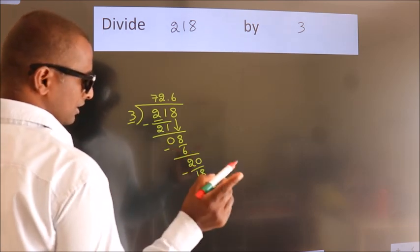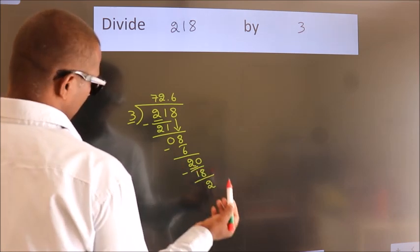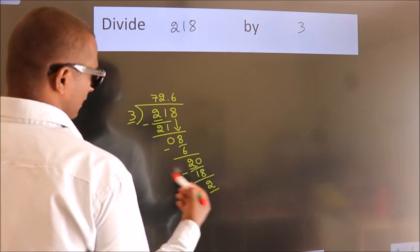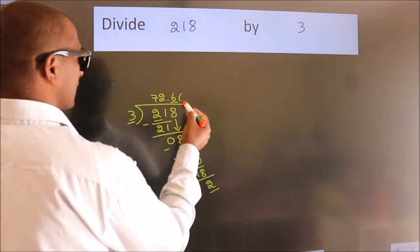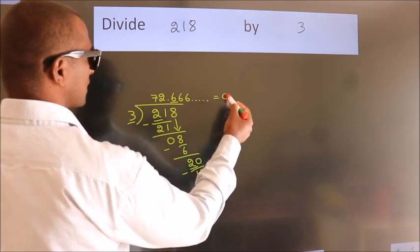Now you observe. We had 2 here and we got 2 again. That means this number keep on repeating. So this is our quotient.